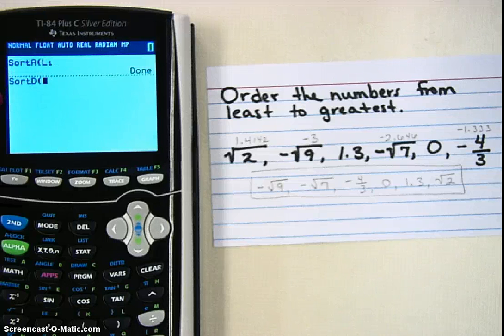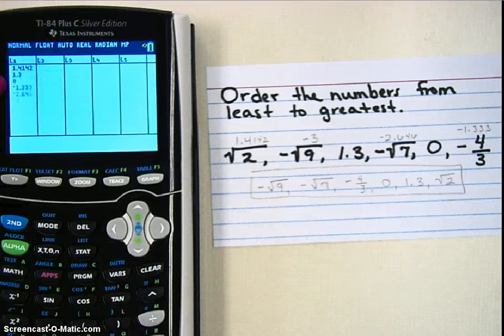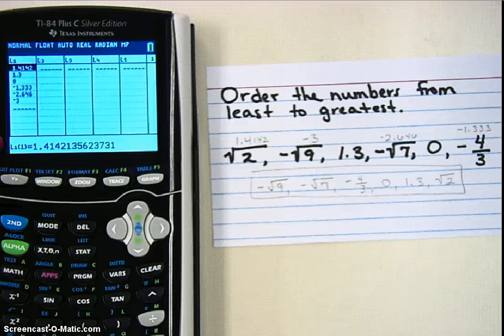And then once again, hit 2nd 1 to tell it L1. And then when I go back to STAT and look at my list, now it's in order from greatest to least.